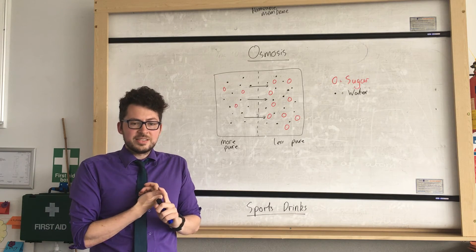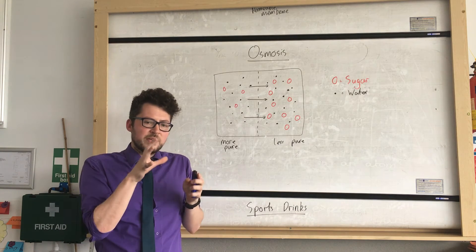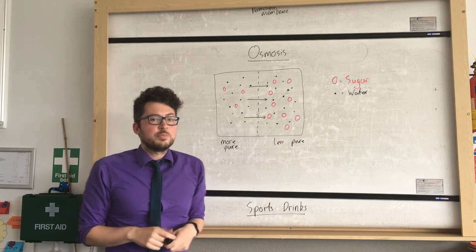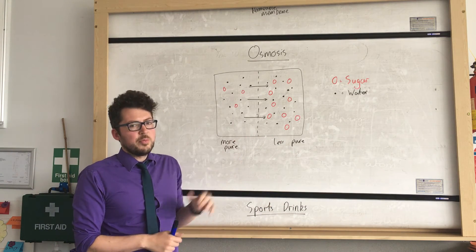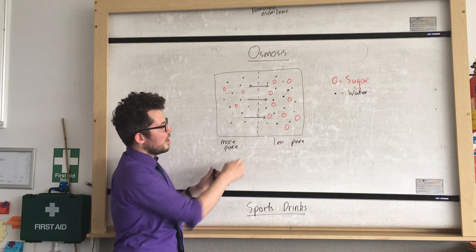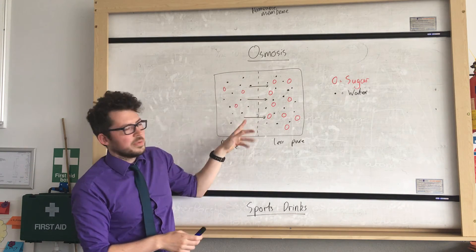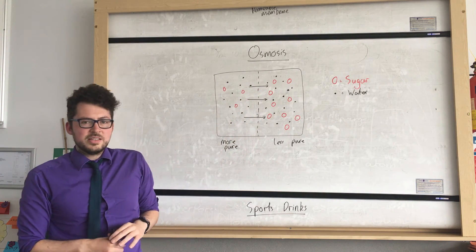So the more pure the water is, the more chance there is of the water moving from there to an area where it's less pure. And again, this occurs across a partially permeable membrane, which is indicated by my dotted line up through the middle of this example here. So that's osmosis.